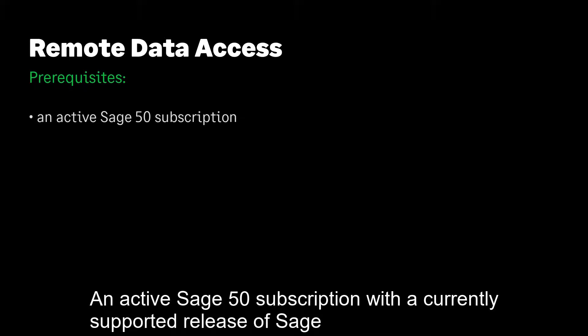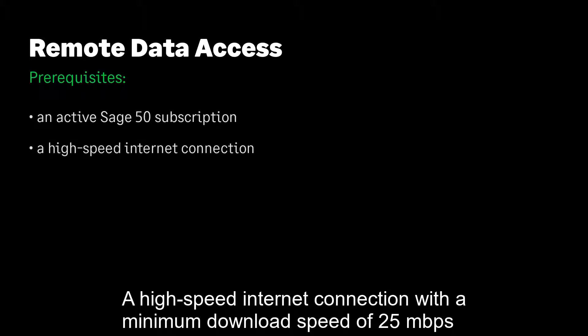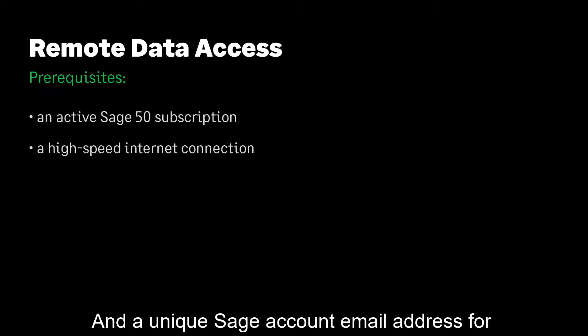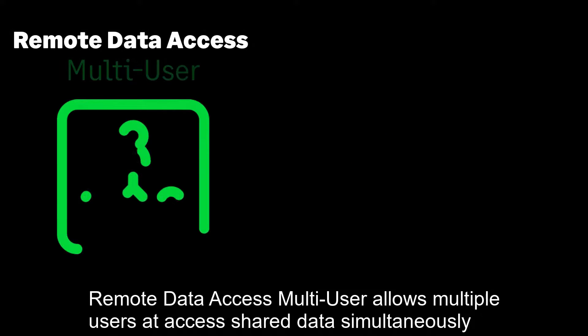To use Remote Data Access, you will need an active Sage 50 subscription with a currently supported release of Sage installed on each computer accessing the data, a high-speed internet connection with a minimum download speed of 25 megabits per second and upload speed of 10 megabits per second, and a unique Sage account email address for each Sage 50 user accessing the company data.